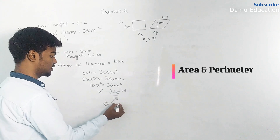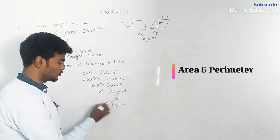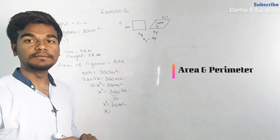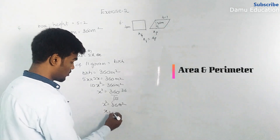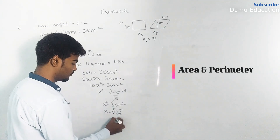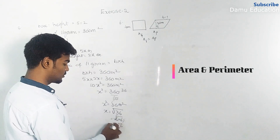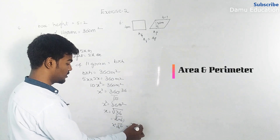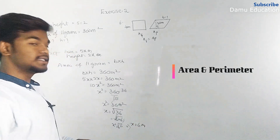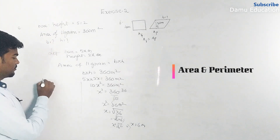Since x² = 36, we take the square root of both sides. The square root of 36 is 6, since 6 × 6 = 6², and the square root cancels the square. Therefore x equals 6 meters.